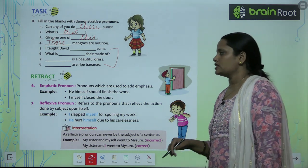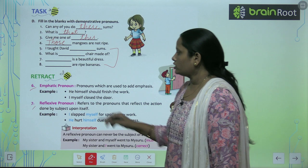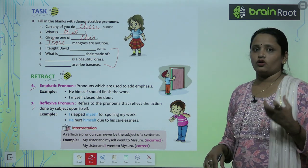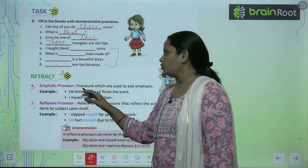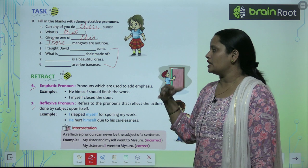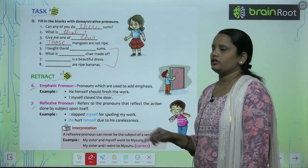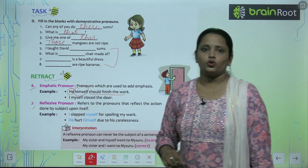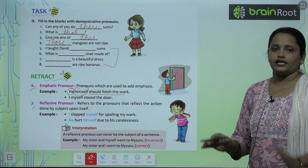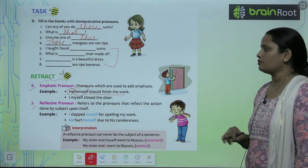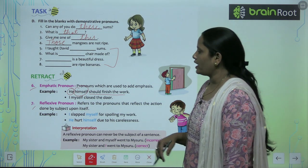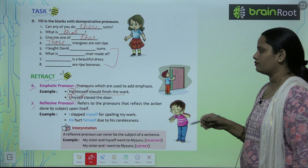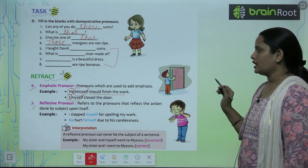Now let's learn about emphatic and reflexive pronouns. Emphatic pronouns are used to add emphasis to a noun or pronoun. For example: 'He himself should finish the work' — here 'himself' adds emphasis to 'he', both referring to the same person. 'I myself closed the door' — here 'myself' is the emphatic pronoun.